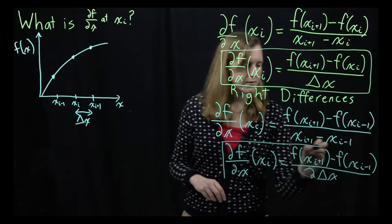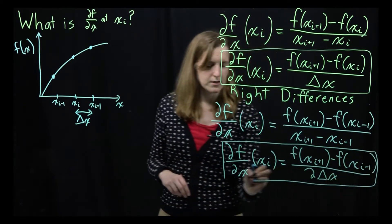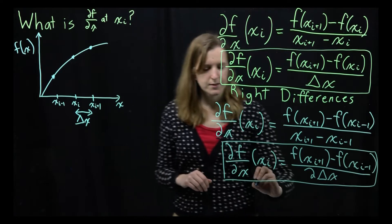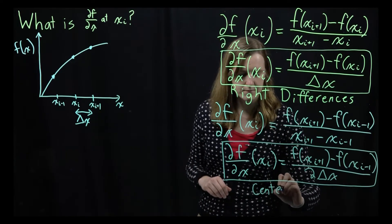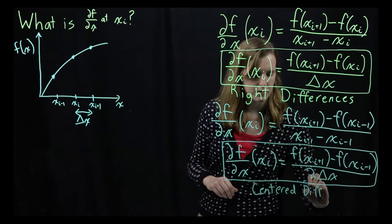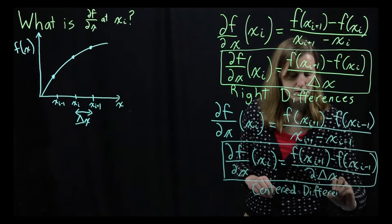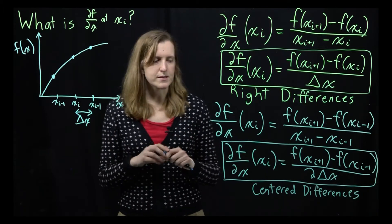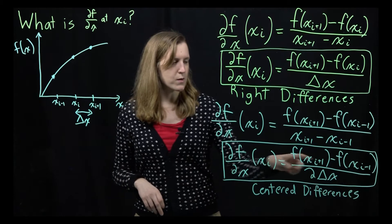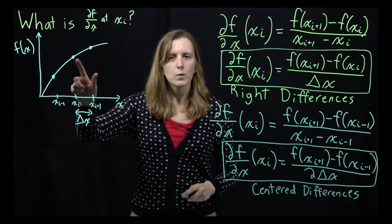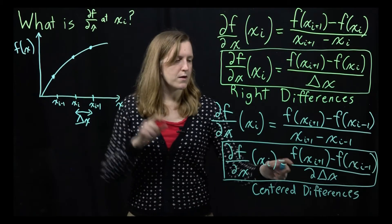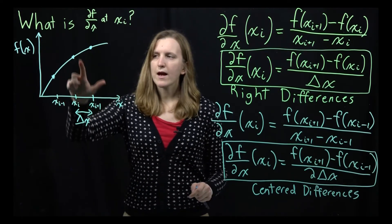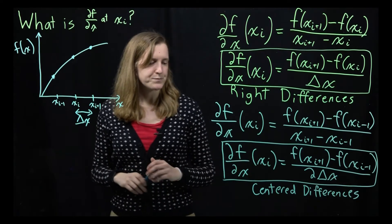And so whereas the value of our estimate that we used before, whereas this was the right differences, this equation that we've just derived here, that's what's known as centered differences. Centered obviously because we want to know the value of our point, and so we're looking, it's even on both sides. It is sort of an interesting equation in that you can see that to calculate the derivative here, we don't end up using the value of this point. We only use xi plus 1 and we use our other value, which is at i minus 1. But we never actually use xi to calculate the value of its derivative.